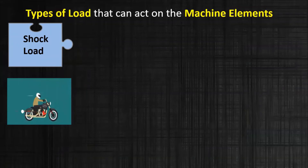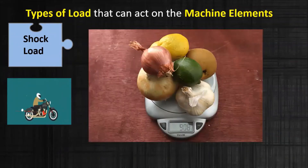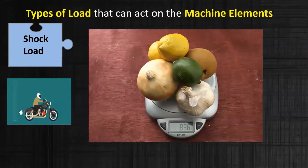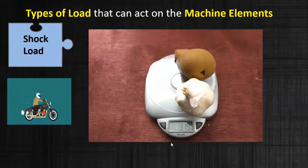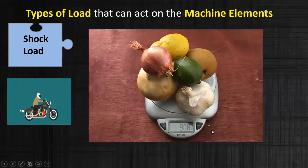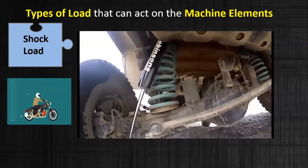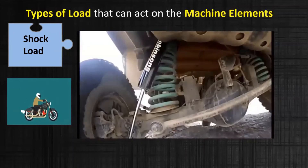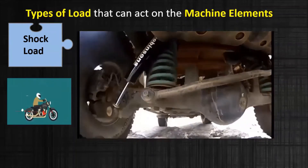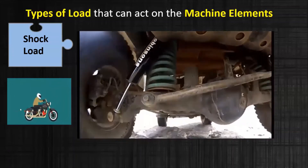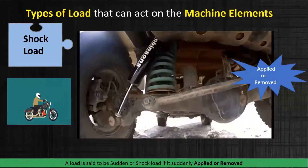Let's understand what a shock load is. Consider an electronic weighing machine — a familiar machine we see in markets. When a weight is applied on the machine, the display board shows the weight, and when the weight is removed, the display goes off. Another example: when we drive a car or bike, a shock is applied due to a change in the road surface or a sudden change in speed, such as when passing over a speed bump. The shock is suddenly applied or removed.